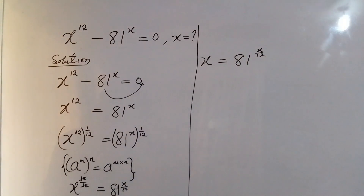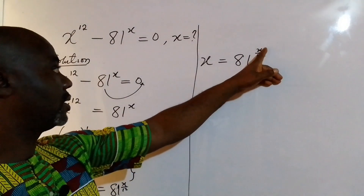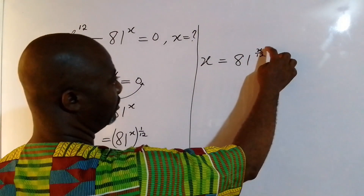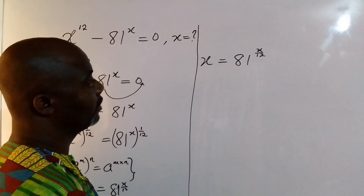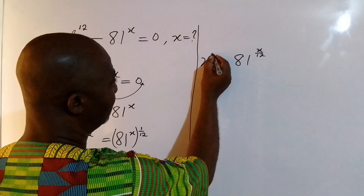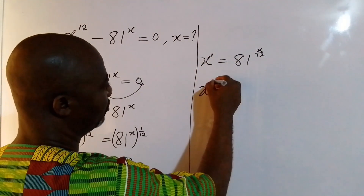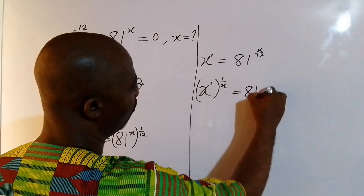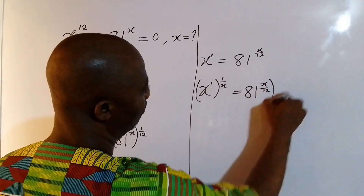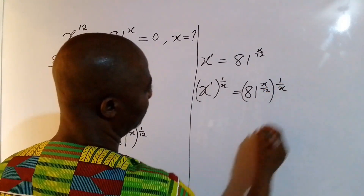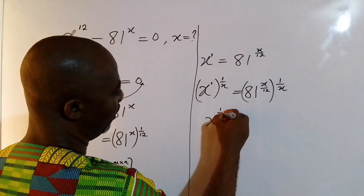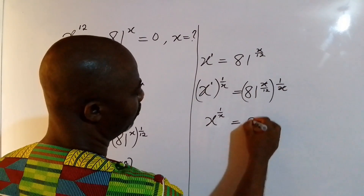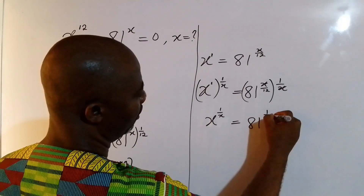Now I also want to eliminate the x on the right hand side. To do that, I will multiply the powers on both sides by 1 over x. So I have x to the power of 1 multiplied by 1 over x, equal to 81 to the power of x over 12, with the same power multiplied by 1 over x. This gives x to the power of 1 over x on the left, and the x cancels on the right, so we have equal to 81 to the power of 1 over 12.